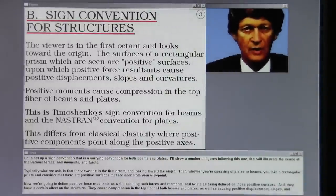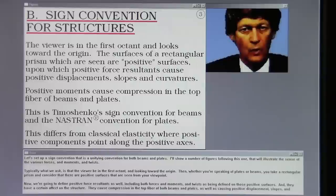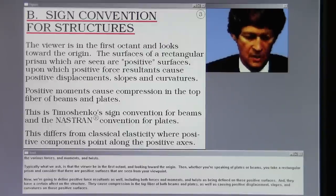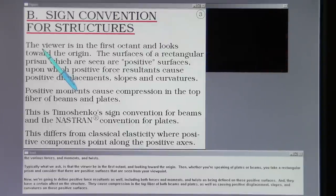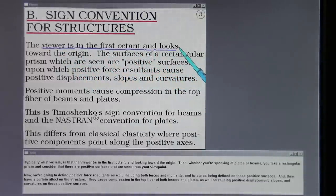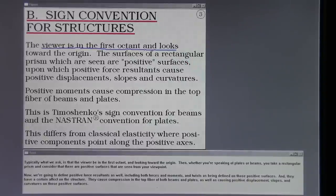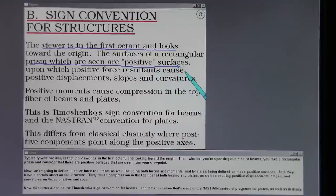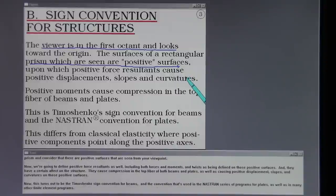Let's set up a sign convention that is a unifying convention for both beams and plates. I'll show a number of figures following this one that will illustrate the sense of the various forces and moments and twists. Typically what we ask is that the viewer be in the first octant and looking toward the origin. Then whether you're speaking of plates or beams, you take a rectangular prism and consider that there are positive surfaces that are seen from your viewpoint. Now we're going to define positive force resultants as well, including both forces and moments and twists, as being defined on those positive surfaces.